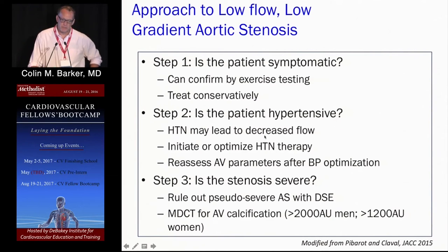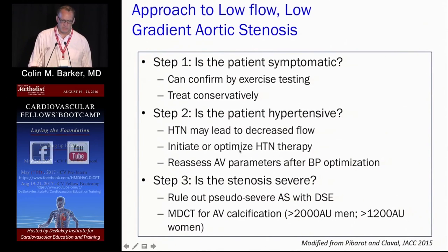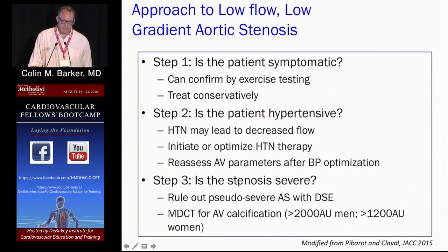Ask whether the patient is hypertensive — it's simple but sometimes overlooked. Hypertension can decrease flow, and recent data published in JACC shows that treating hypertension in paradoxical low-flow low-gradient patients actually improves their aortic stenosis, which makes sense pathophysiologically. Once blood pressure is optimized, reassess — often the AS is not as bad as initially thought. If it still appears to be a severe lesion, a dobutamine stress echo can help tease out who truly has severe AS. Additionally, quantifying valve calcification is important: a heavily calcified valve strongly suggests true aortic stenosis and supports a decision to intervene.